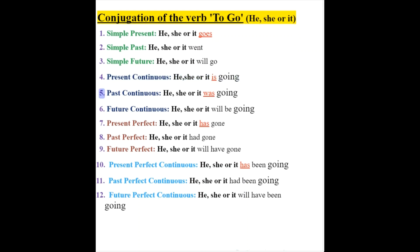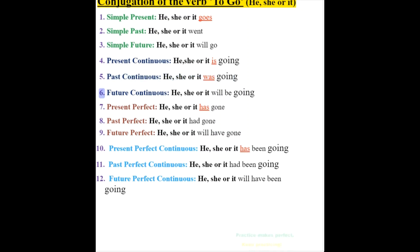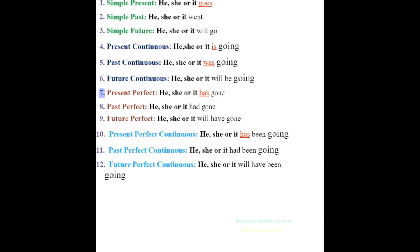5. Past continuous: he, she or it was going. 6. Future continuous: he, she or it will be going. 7. Present perfect: he, she or it has gone.